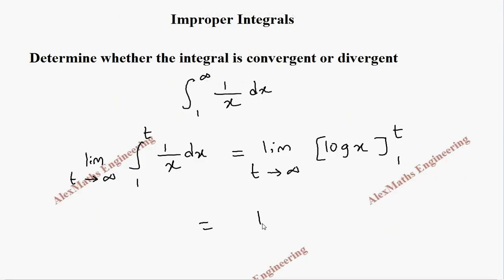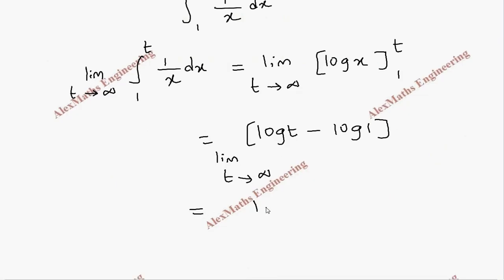Now this becomes log t minus log 1, and we have limit t tends to infinity. Log 1 is 0, so finally we have limit t tends to infinity of log t. When we substitute the limit we get log infinity, which is equal to infinity.